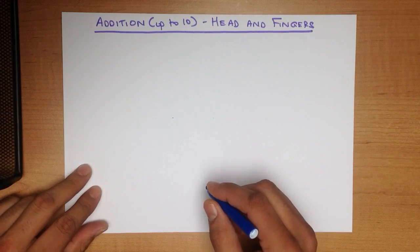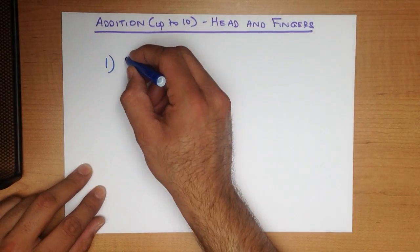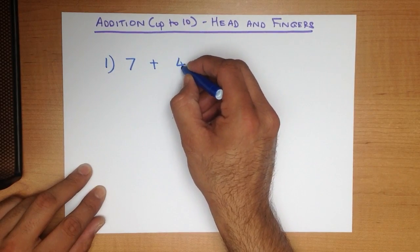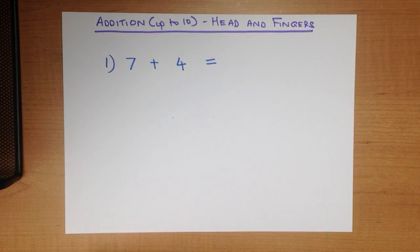Let's start with a nice easy example. What is 7 plus 4? Now how do we do this using the head and fingers method?